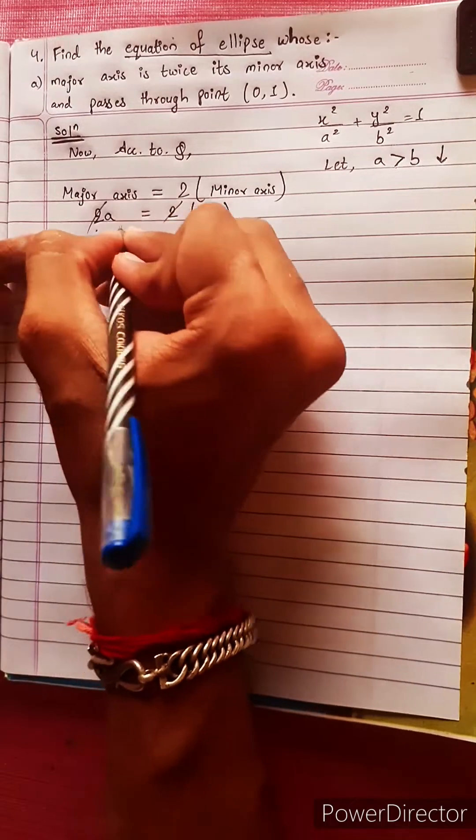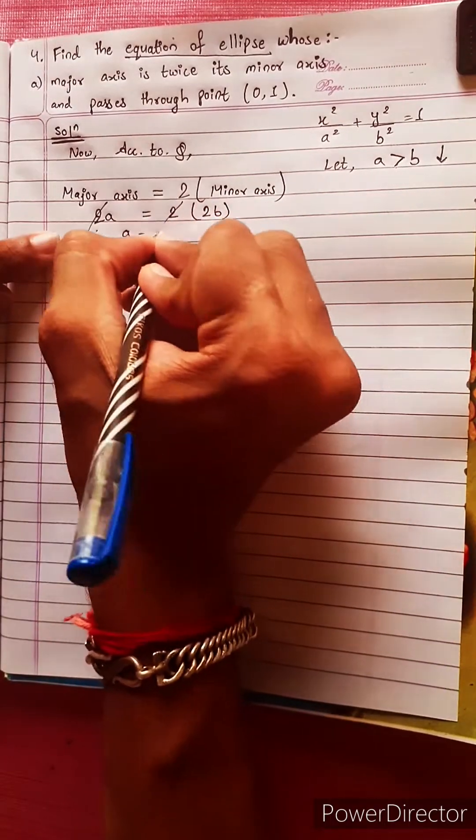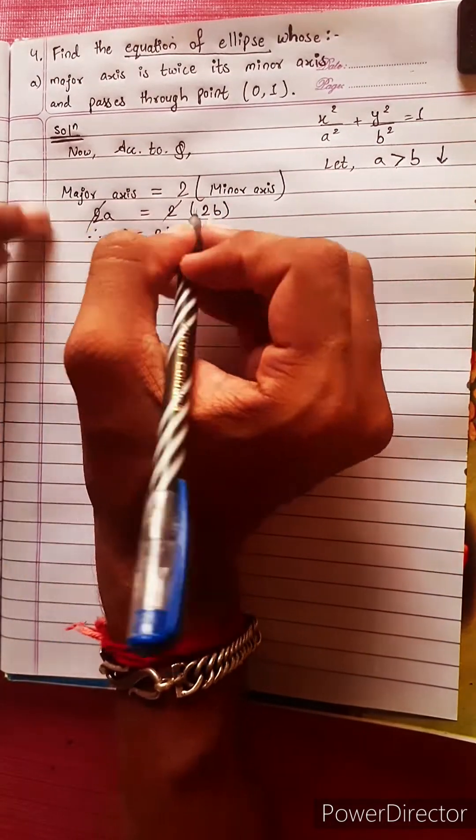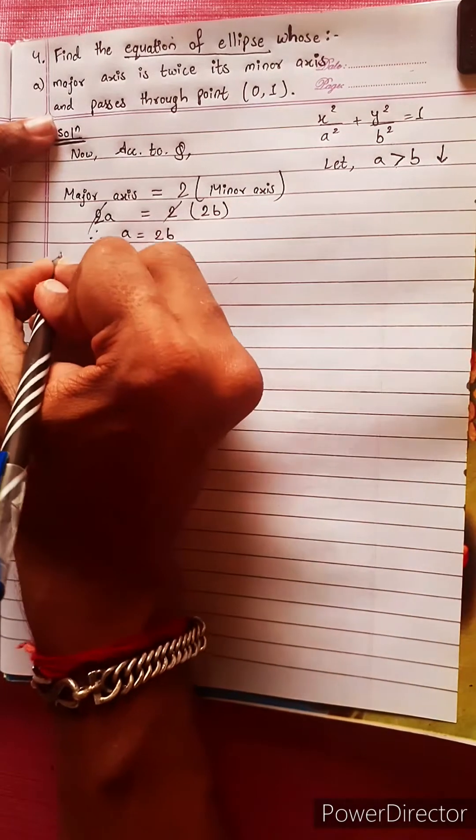Therefore, a equals 2b. Also, the ellipse passes through a given point.